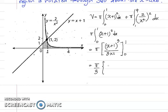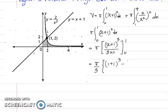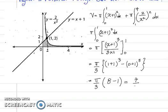Replacing x with 1: (1+1)³ = 2³ = 8. Replacing x with 0: (0+1)³ = 1³ = 1. So we have π/3 times (8 − 1), which gives 7π/3 cubic units.